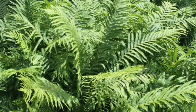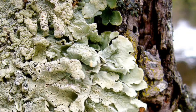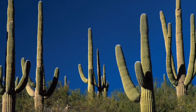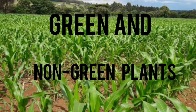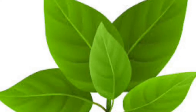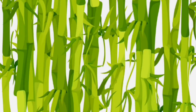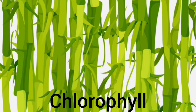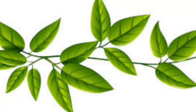Plants are classified according to many factors. Let's look at green and non-green plants. Green plants are those whose external parts, such as the leaves, stems and branches, are green in color. They have the green coloring substance that we call chlorophyll, and they make their own food through a process called photosynthesis.